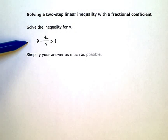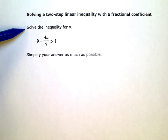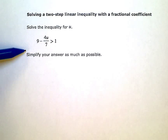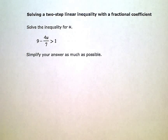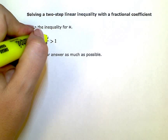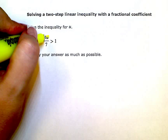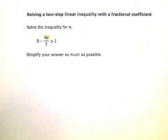I have an inequality here. The instructions say solve the inequality for u and simplify my answer as much as possible. I need to isolate or get this u all by itself on one side of my inequality symbol.